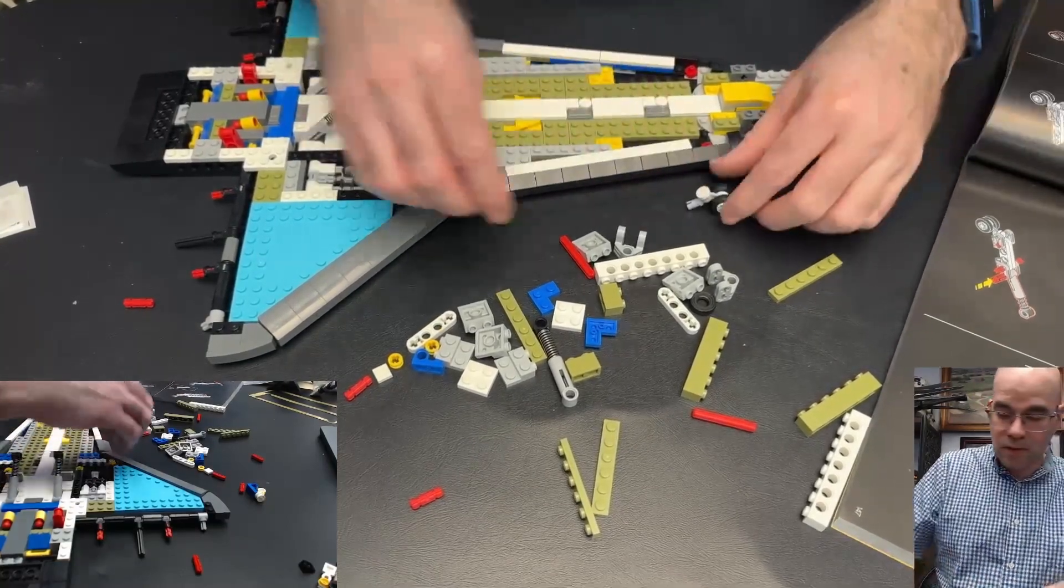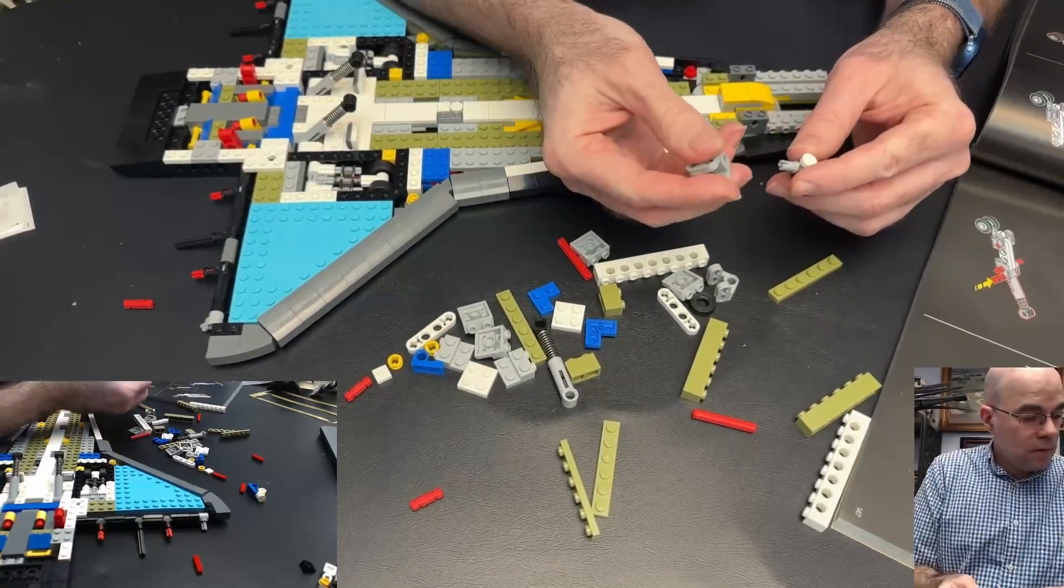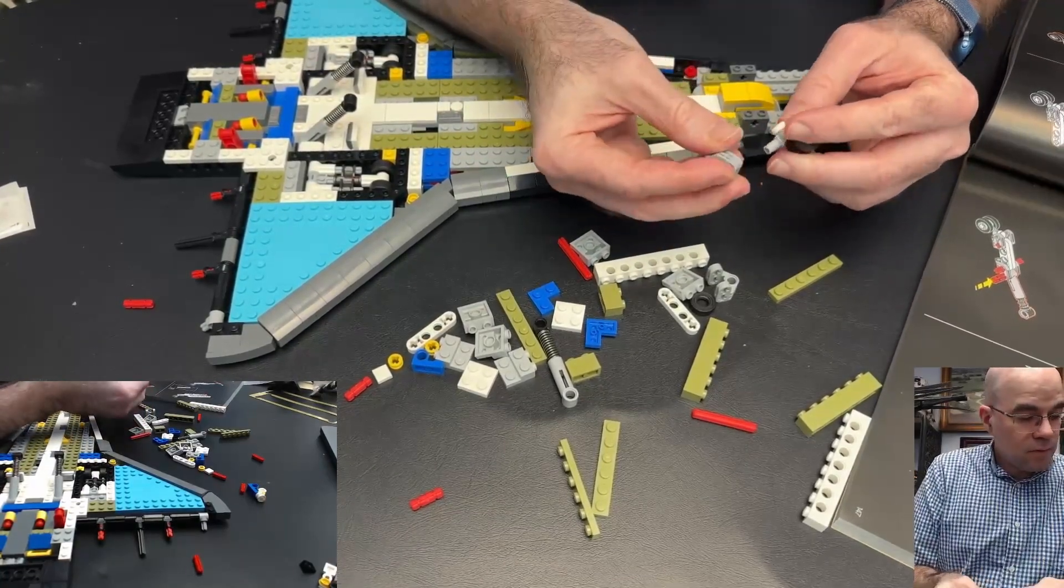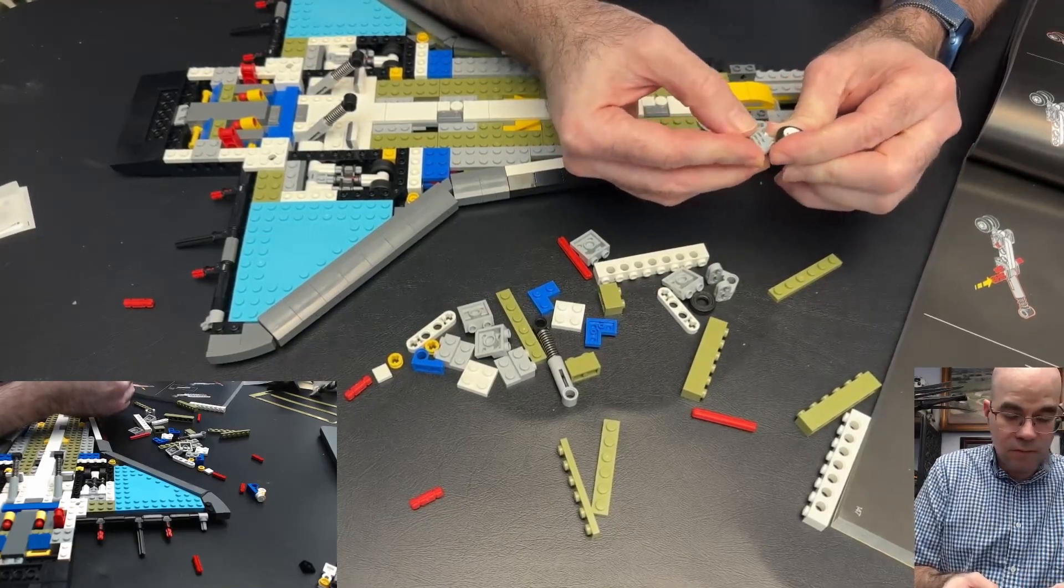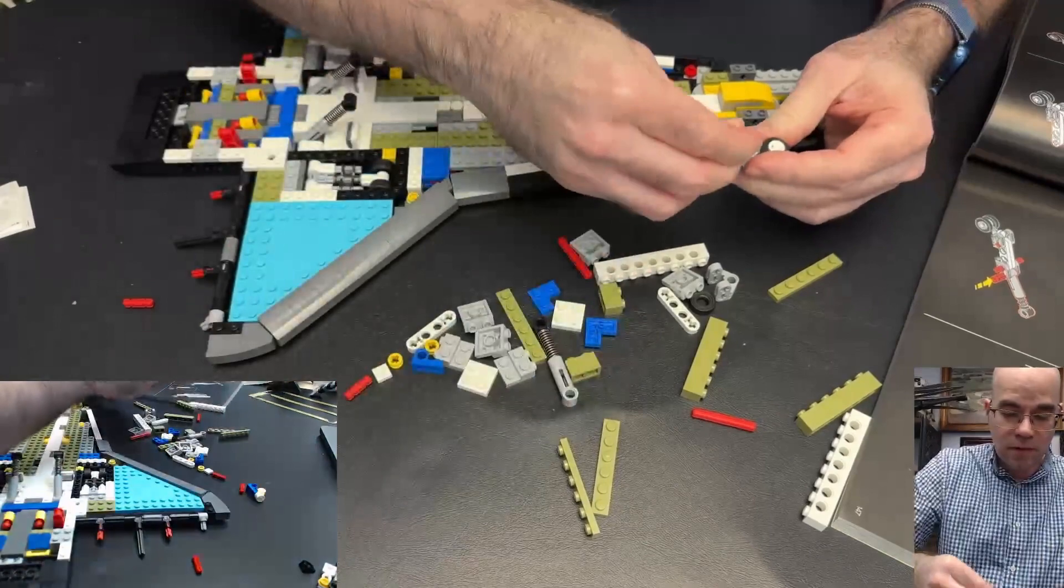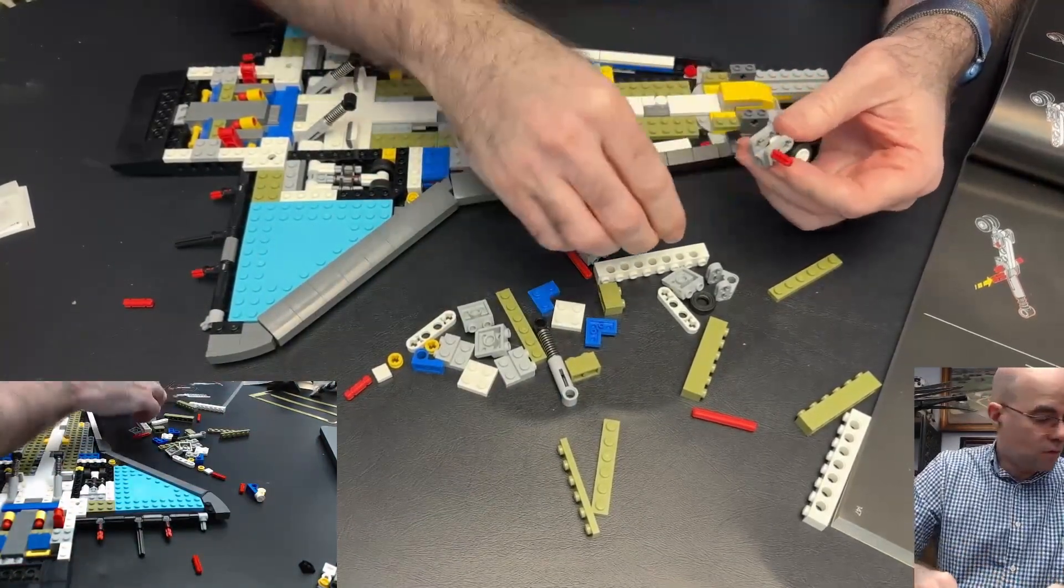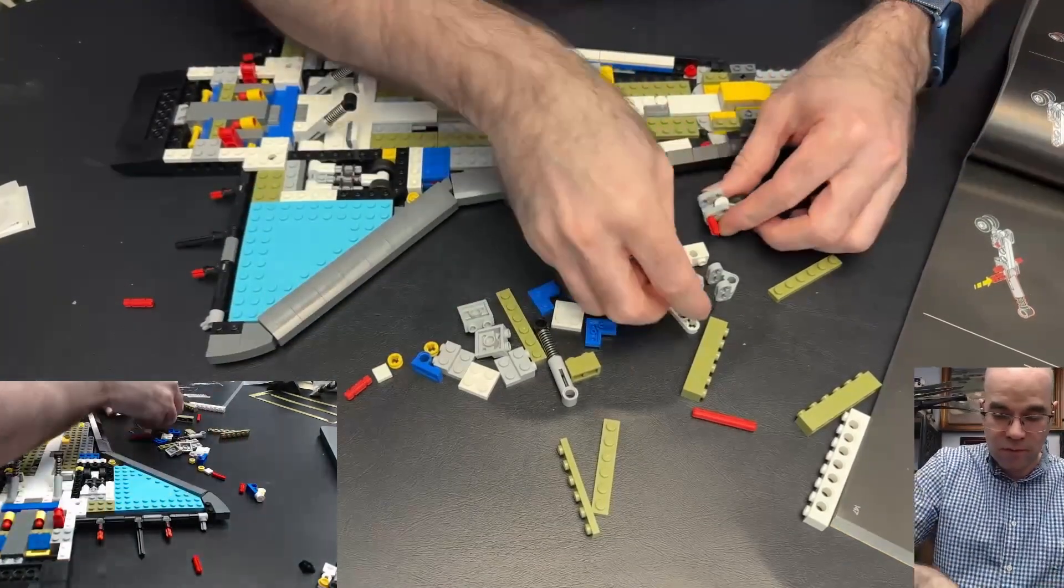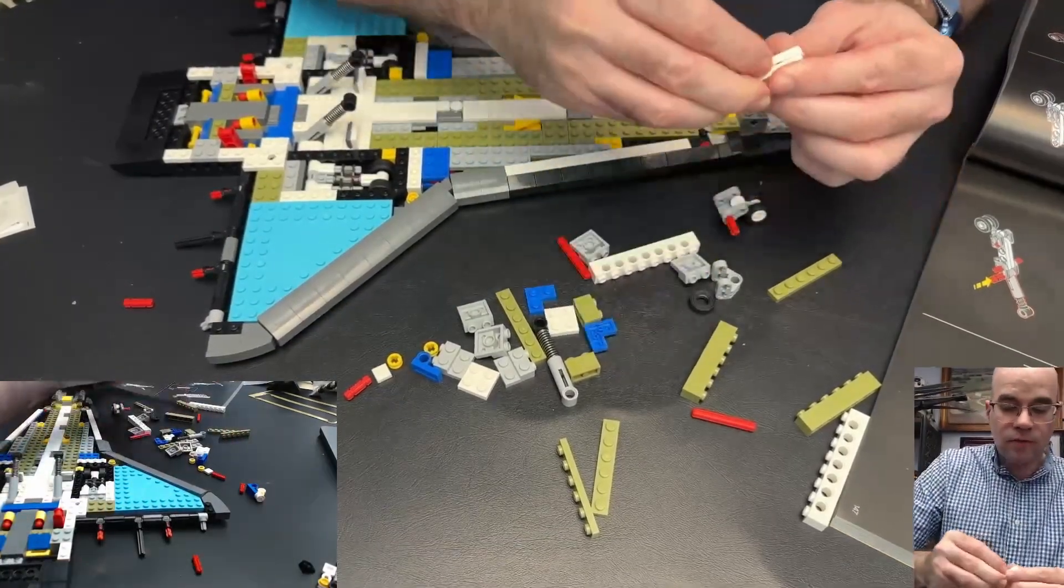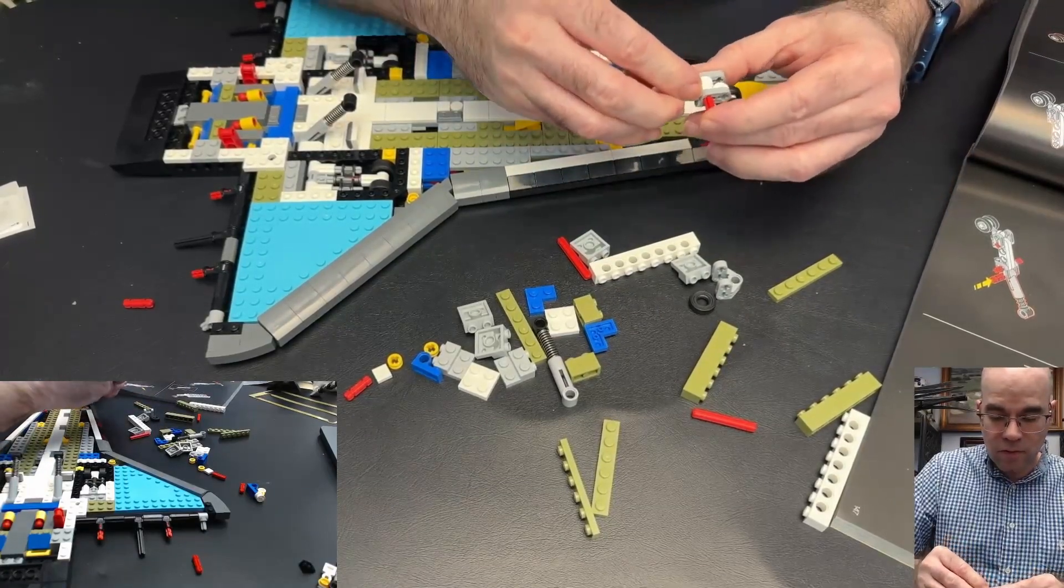Okay, now we have this piece that's supposed to go on like this. The red axle, I'm gonna push that through onto two of these half beams. This is where it's fun. Okay.